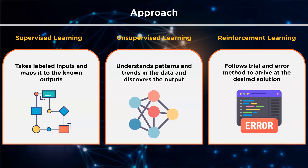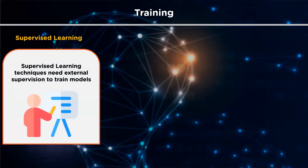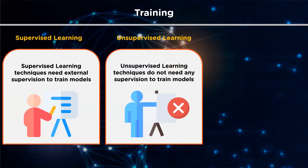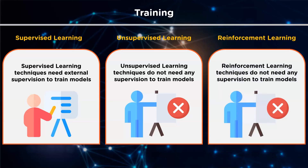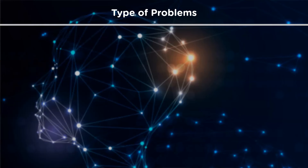An example of reinforcement learning's reward system is training a dog to catch a ball — if the dog learns to catch the ball, you give it a reward such as a biscuit. Regarding the training process: supervised learning methods need external supervision to train models and require guidance and additional information to return the result. Unsupervised and reinforcement learning methods do not need any supervision to train models — they learn on their own.